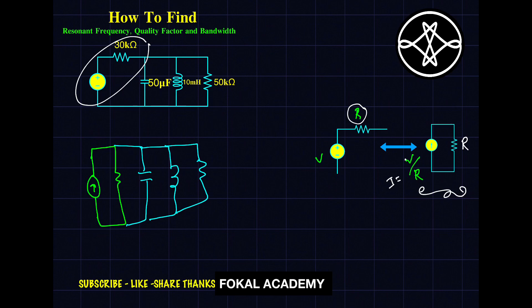Current is V by R, so let us assume there is voltage V here. So V by R is 30 kilo ohms. This is 30 kilo ohms, and the capacitance is 50 microfarad, and inductance is 10 millihenry, and this is 50 kilo ohms.